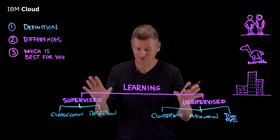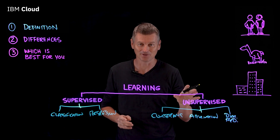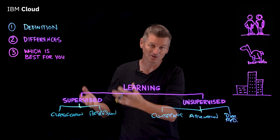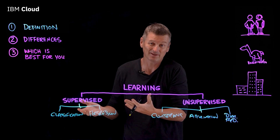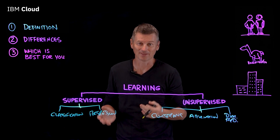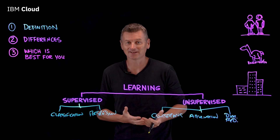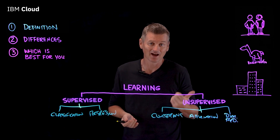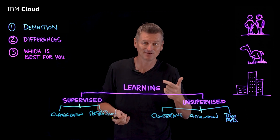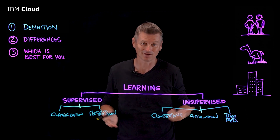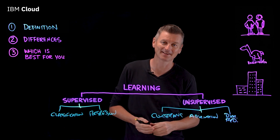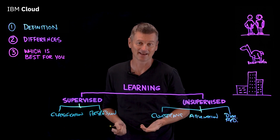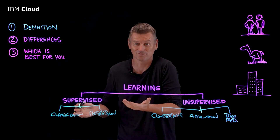So which of these two options is right for you? Supervised learning is more commonly used because it's more accurate and efficient. But unsupervised learning has its own advantages: it can be used on data that is not labeled, which is often the case in real-world data sets, and it can find hidden patterns in data that supervised learning models just wouldn't find.